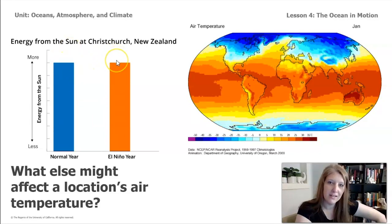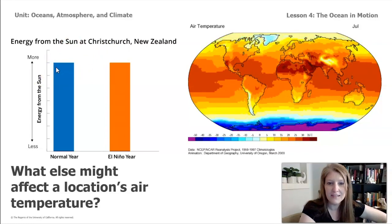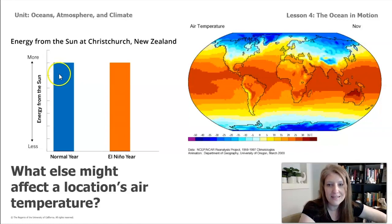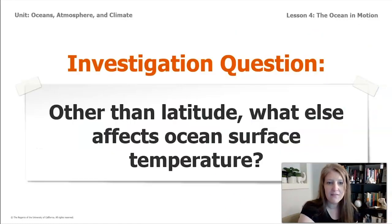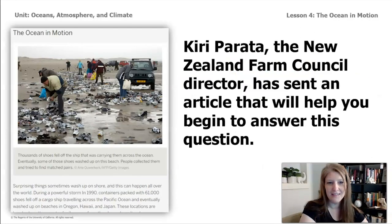We can see from the graph in our last lesson that the amount of energy Christchurch, New Zealand receives during an El Niño year and a normal year is the same. So this is the investigation question we're going to try to understand today: other than latitude, what else affects ocean surface temperature? To explore this, we're going to read an article called The Ocean in Motion, sent to us by Kitty Parada from the New Zealand Farm Council.